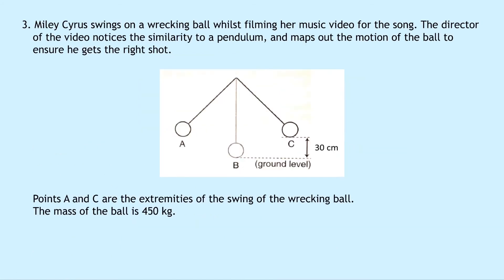Question 3 says that Miley Cyrus swings on a wrecking ball whilst filming her music video. The director maps out the motion of the ball like a pendulum. Points A and C are the extremities of the swing, the mass of the ball is 450 kilograms, and points A and C are 30 centimeters above point B, which is at ground level.